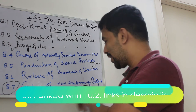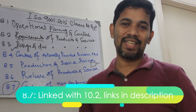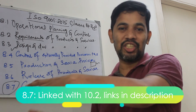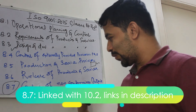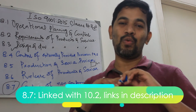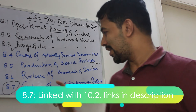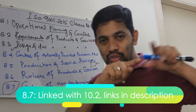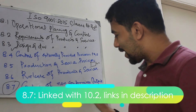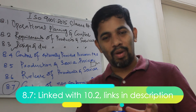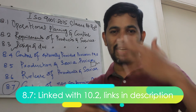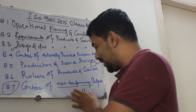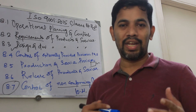The last one is 8.7 — control of non-conforming output. For example, if the customer is not happy with the product or services and needs to return it, you need to have a procedure to manage that non-conforming output. For more information you can also read the associated class 10.2 — non-conformity and corrective action — which I have already developed in the past.